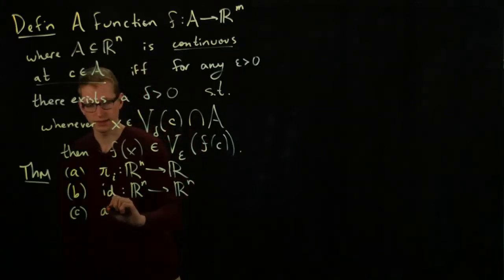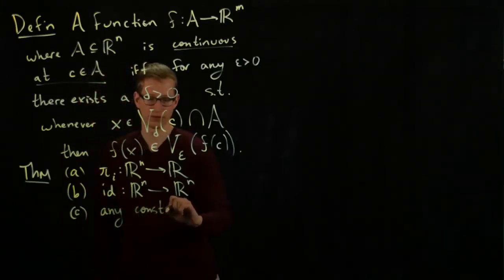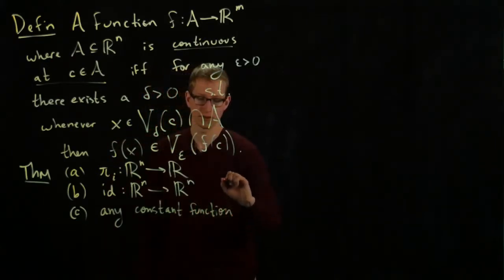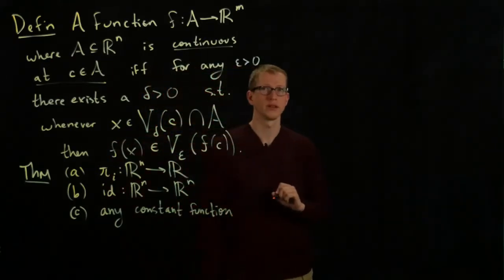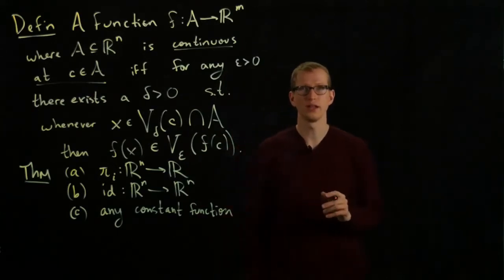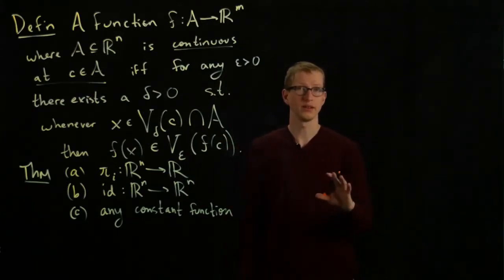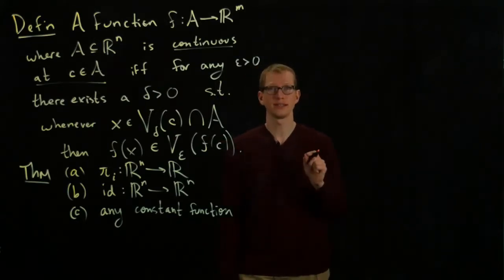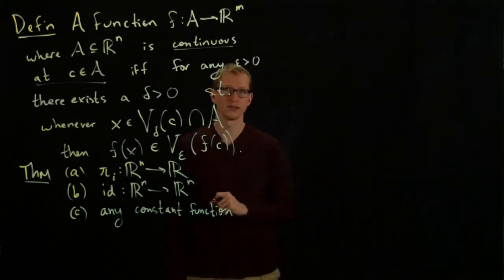(c) Any constant function is continuous. A constant function is one that's defined on any domain which is again a subset of R^n for any n, and its value is exactly the same no matter which point you pick.